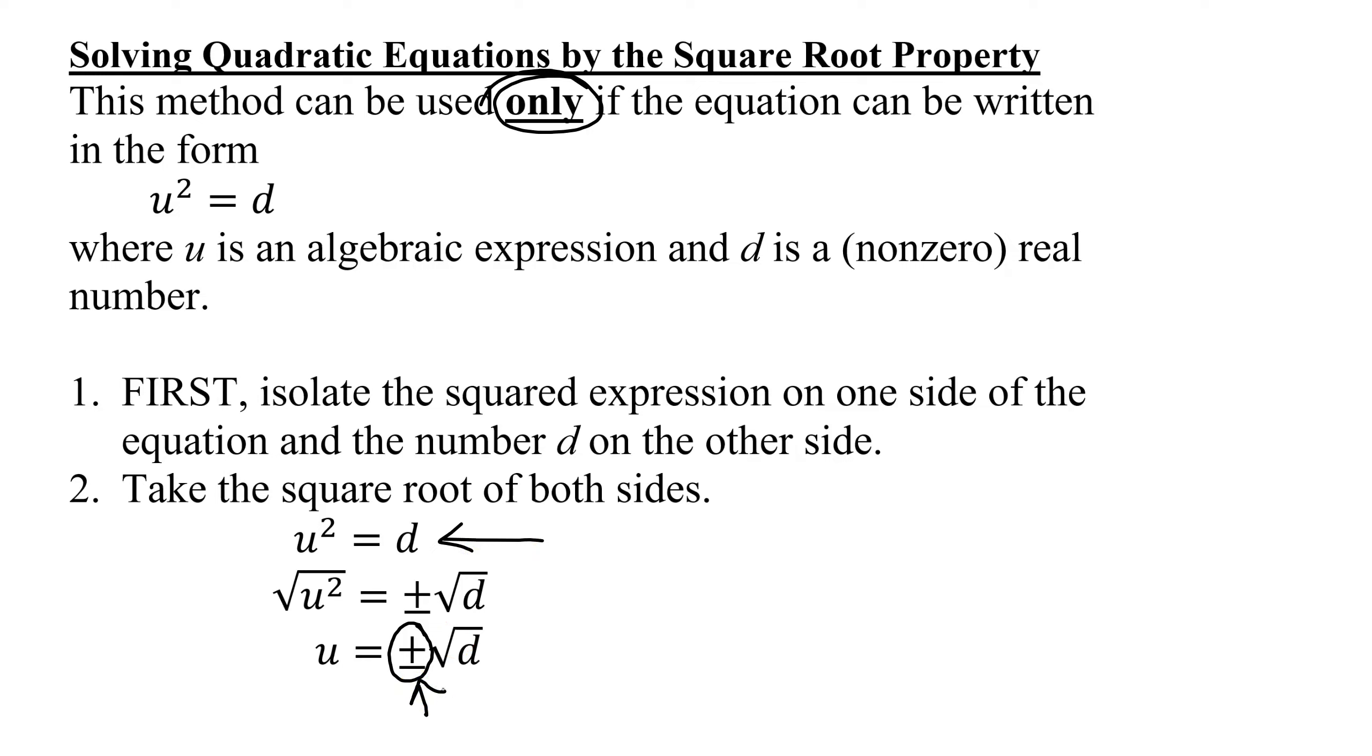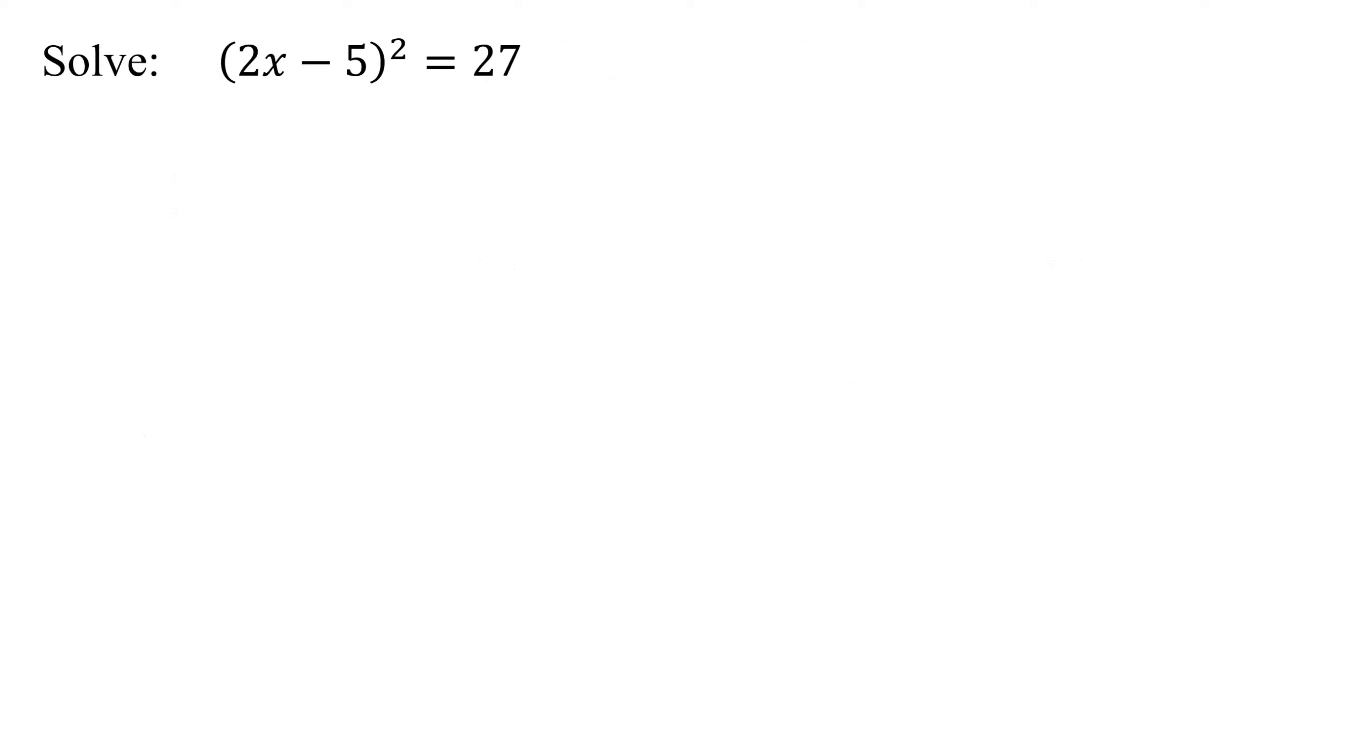The first step is to isolate the squared expression on one side. That's already done for us. Now I take the square root of both sides of this equation. So I get √[(2x - 5)²] = ±√27.